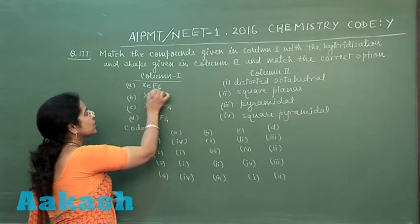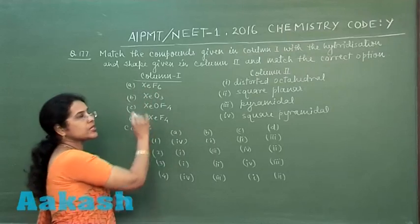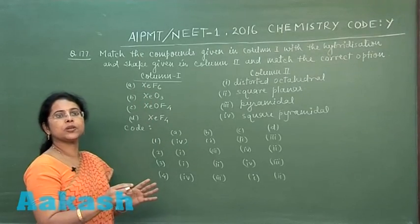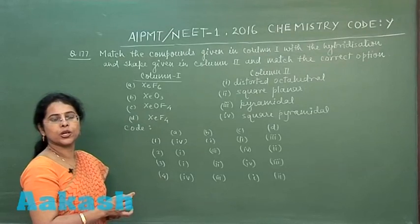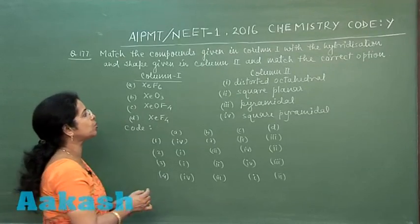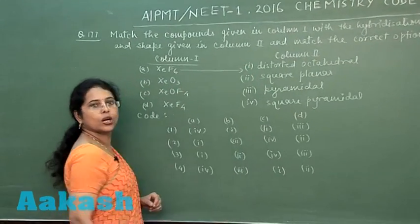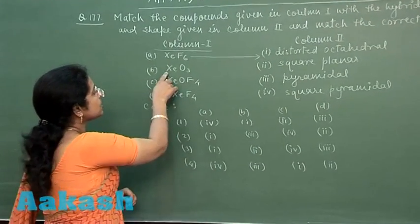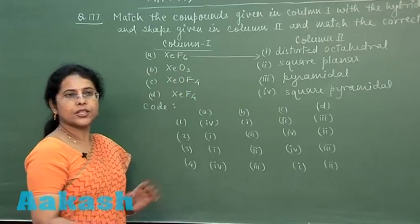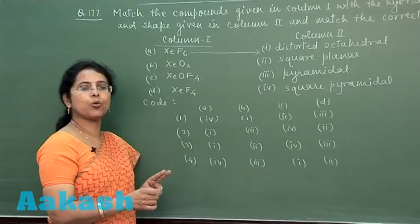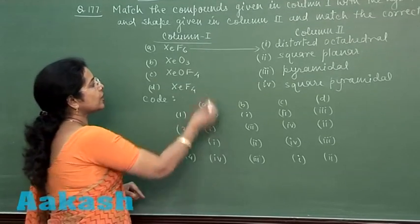Starting with xenon hexafluoride (XeF₆): the central atom has 6 bond pairs and 1 lone pair, so according to VSEPR theory the molecular shape should be distorted octahedral. The second compound, xenon trioxide (XeO₃), has 3 bond pairs and 1 lone pair, so the correct shape is pyramidal.